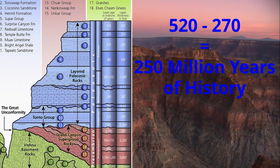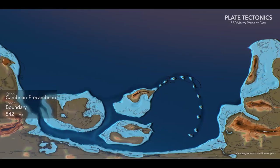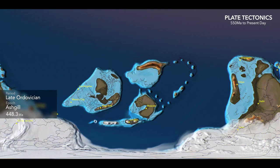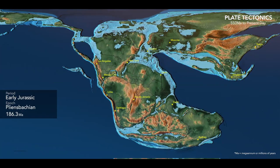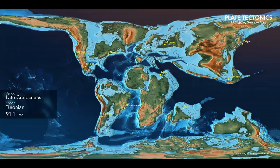The earth changes drastically over this timescale. Here's how the earth's surface changed over the last 540 million years due to plate tectonics — keep in mind this movement is happening at painfully slow speeds, somewhere in the ballpark of half to 10 centimeters a year.